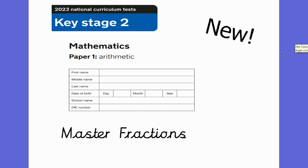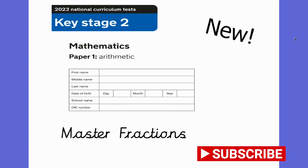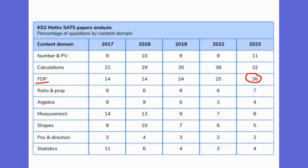Hello and welcome back to the channel. Today's video is all about how to master the fractions questions on the arithmetic paper. There are a significant number of fractions questions on the arithmetic paper and getting them correct can really help you to get a good score. As you can see from this table, over 26 marks in the 2023 paper went towards fractions, decimals and percentages, the majority of which were fractions questions.